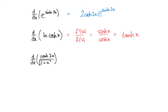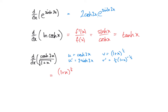The final example uses the quotient rule. Let u equal cosh 2x, so u dash is 2 sinh 2x. And v is the square root of 1 plus x, or (1 plus x) to the power of one half, so v dash is one half times (1 plus x) to the power of minus one half, multiplied by the differential of 1 plus x which is just 1. Applying the quotient rule: v du/dx is (1 plus x) to the one half times 2 sinh 2x, minus u dv/dx which is minus one half (1 plus x) to the power of minus one half times cosh 2x, all over (1 plus x) to the one half squared, which is (1 plus x).